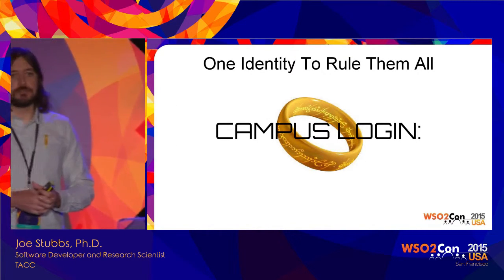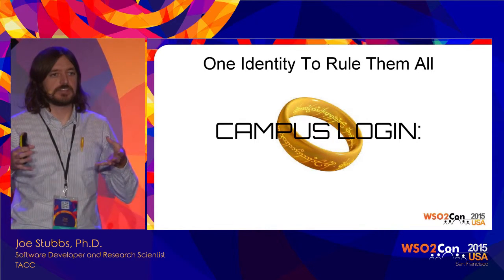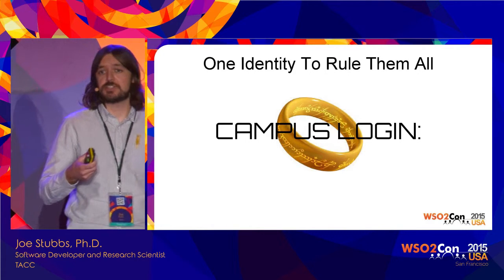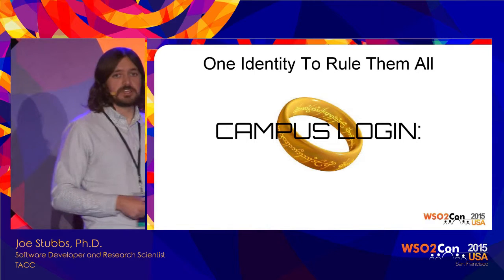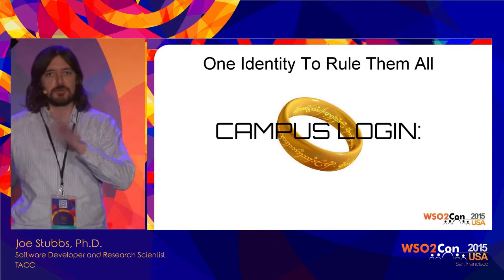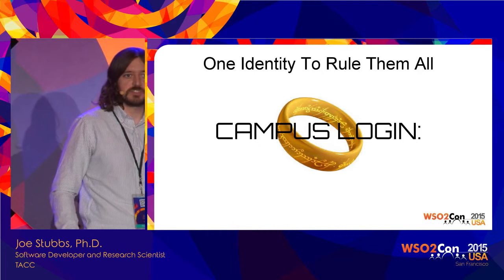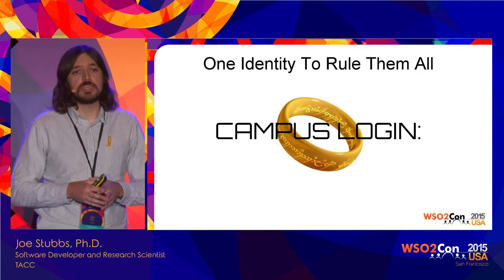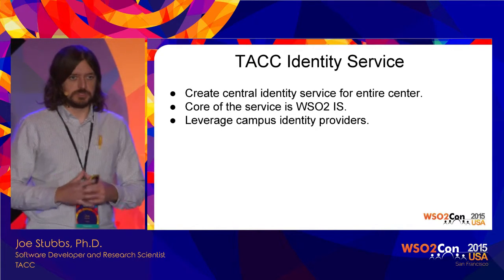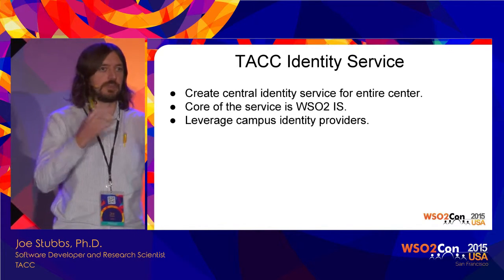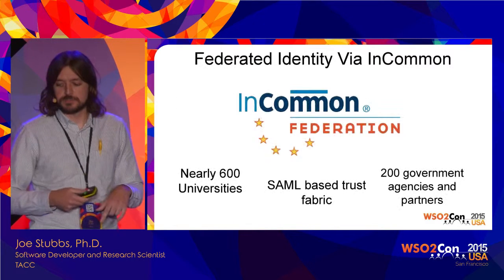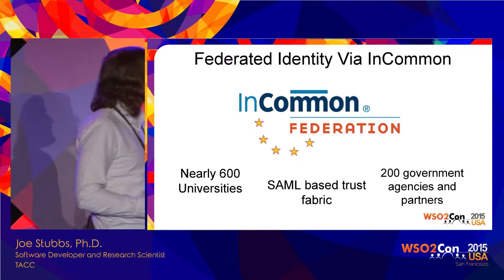Our idea was to federate identity and have a single identity that a user could use to access any of our portals. The question was which identity that should be. Our thought was: wouldn't it be nice if they could just leverage their campus ID? Because all of these people have a campus login — and wouldn't it be nice if they could use that to access any of the portals or APIs? So we decided to create a center-wide identity service to federate identities, with WSO2 Identity Server at the core, using InCommon to leverage the IDP of their university.